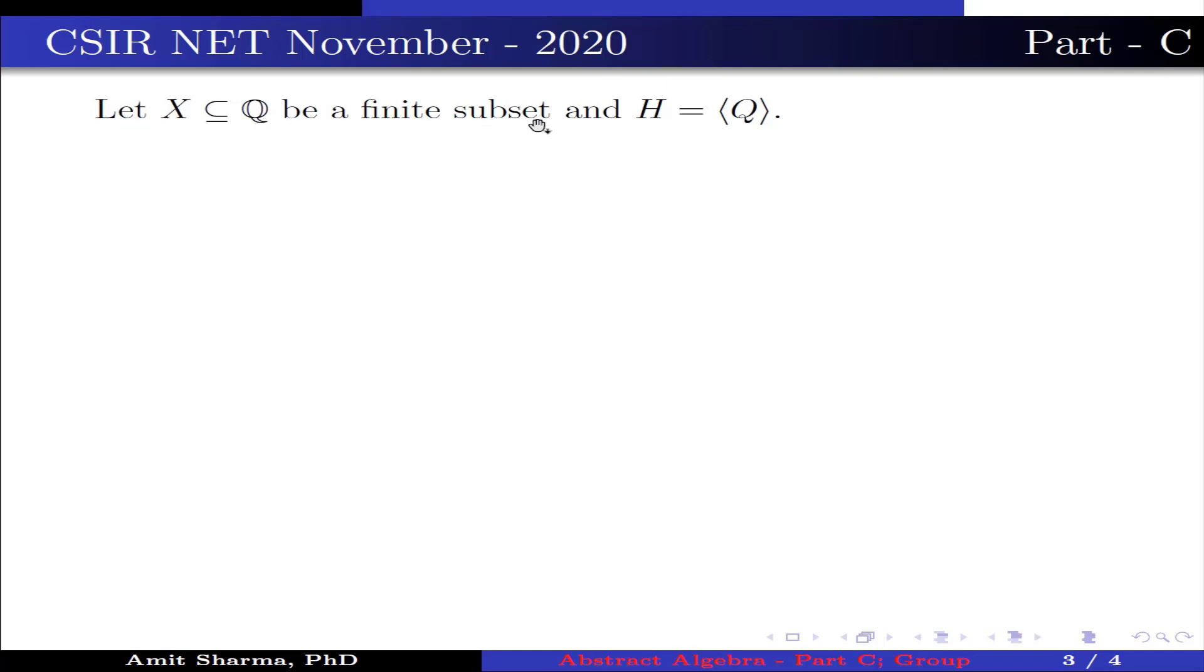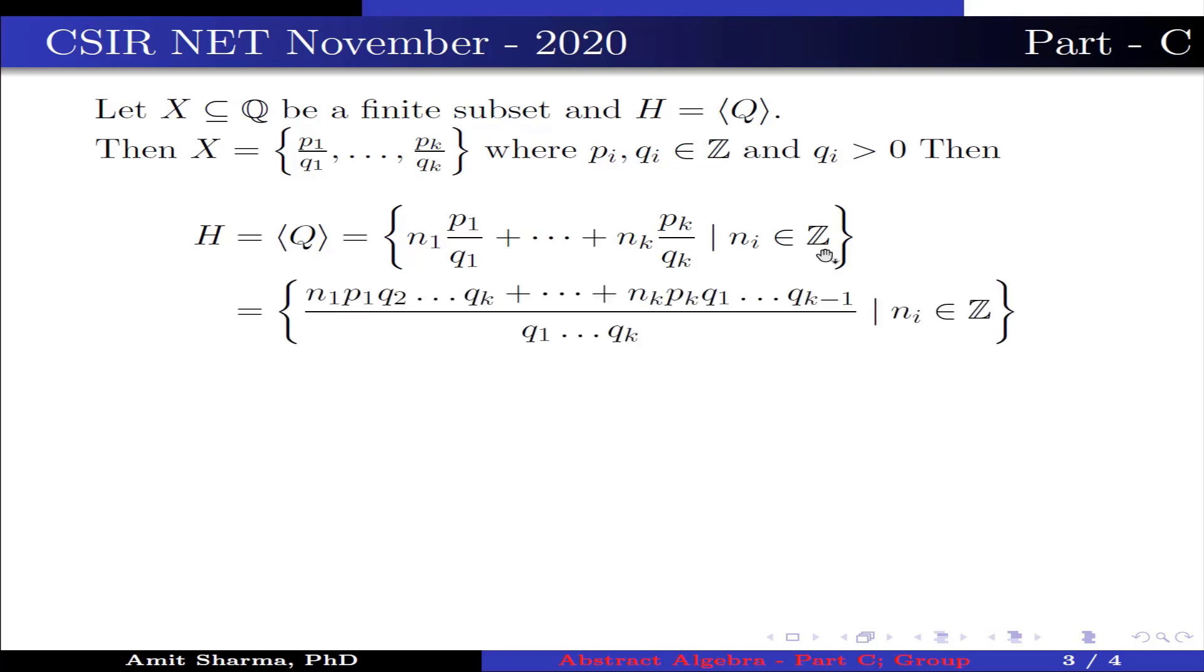Let X ⊆ Q be a finite subset and H = ⟨Q⟩. Then X = {p₁/q₁, ..., pₖ/qₖ} where pᵢ, qᵢ ∈ Z and qᵢ > 0. Then H = ⟨Q⟩ = {n₁p₁/q₁ + ... + nₖpₖ/qₖ | nᵢ ∈ Z} = {n₁p₁q₂...qₖ + ... + nₖpₖq₁...qₖ₋₁ / q₁...qₖ | nᵢ ∈ Z}.